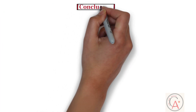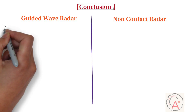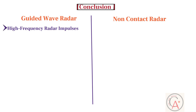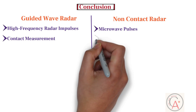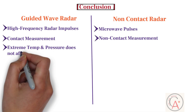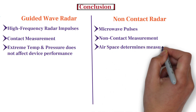In the last part of this video, I will compare both technologies. Firstly, guided wave radar technology uses high-frequency radar impulses for level measurement, while non-contact radar level technology uses microwave pulses. Secondly, guided wave radar is a contact type level measurement technique, whereas pulse radar is a non-contact technique. In addition, guided wave radar level measurement is not affected by extreme temperature and pressure, while the air space determines the measurement accuracy of pulse radar, making it not ideal for extremely difficult applications.